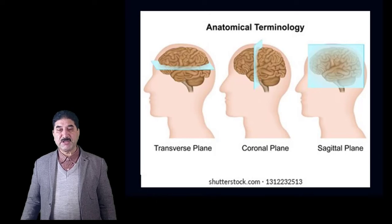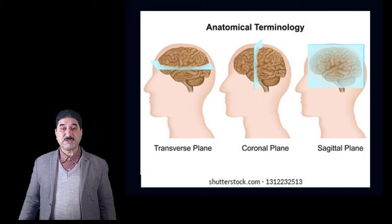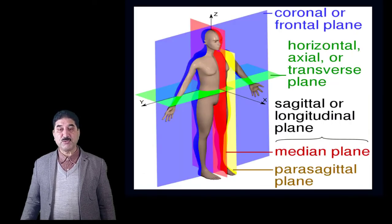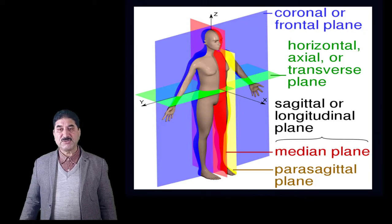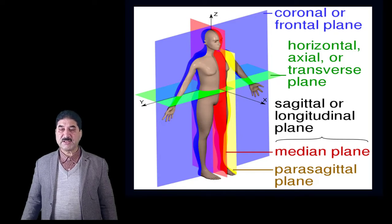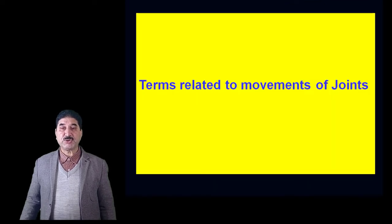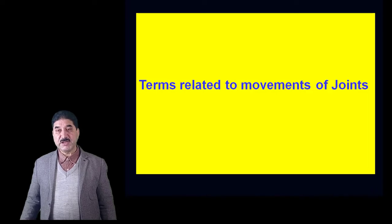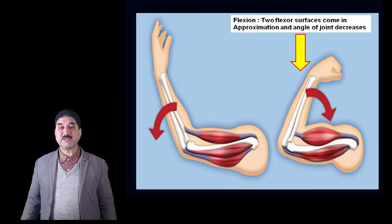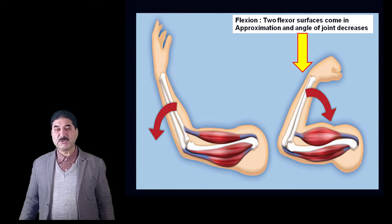In summary, the transverse plane (also called horizontal plane) passes parallel to the horizon and divides the body into superior and inferior parts. The coronal plane passes from side to side and divides the body into anterior and posterior parts. The sagittal plane is an anterior-posterior plane that divides the body into right and left halves. The sagittal plane can be further divided into the median sagittal plane, which passes through the midline dividing the body into two symmetrical halves, and the parasagittal plane, which is any plane lying parallel to the sagittal plane.